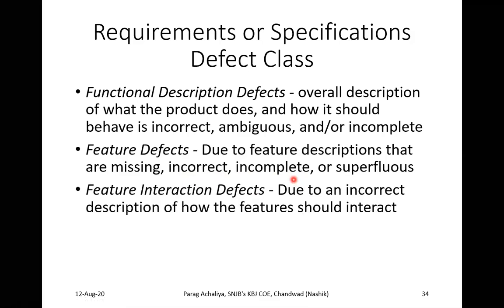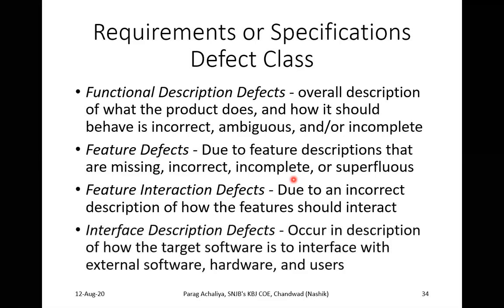Feature interaction defect occurs due to an incorrect description of how features should interact. For example, only 100 participants can join a session, but if the audience is more than 100, the meeting room will be full and new users cannot join. This is the feature interaction defect.